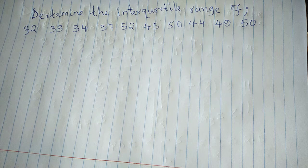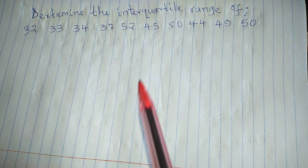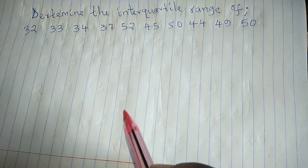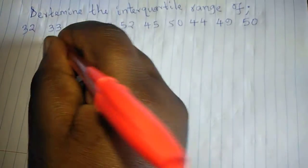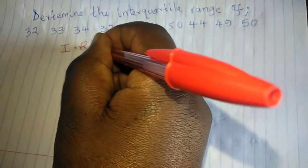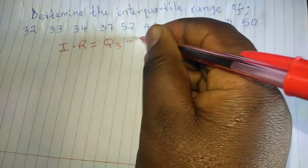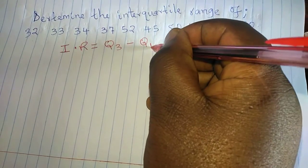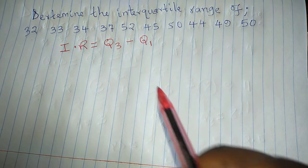We're going to study a question which is telling us to determine the interquartile range of some set of data here. So what we call interquartile range, the interquartile range is usually the difference between the upper quartile and the lower quartile. The upper quartile is called Q3, the lower quartile is called Q1.